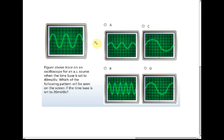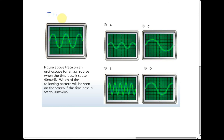Let's find the period of the first trace. The time base is 40 milliseconds per division, and it takes four divisions to make one complete oscillation. So the period is equal to 4 multiplied by 40 milliseconds, which equals 160 milliseconds.